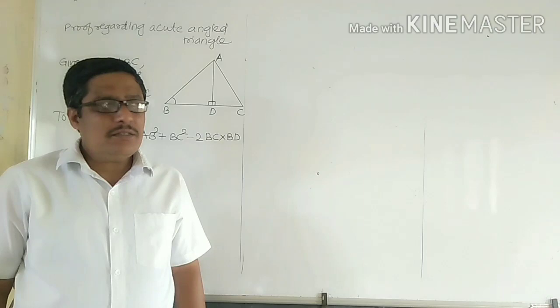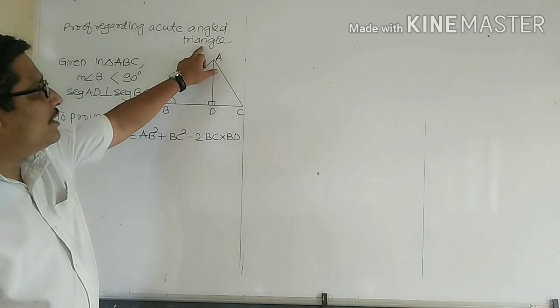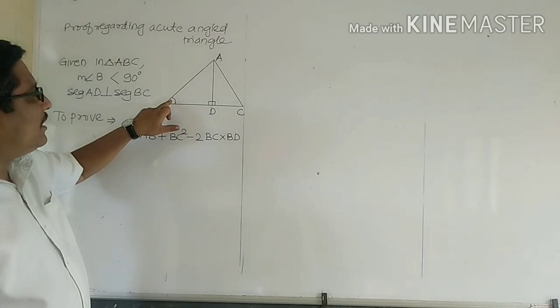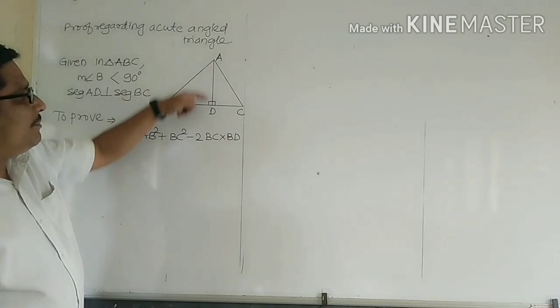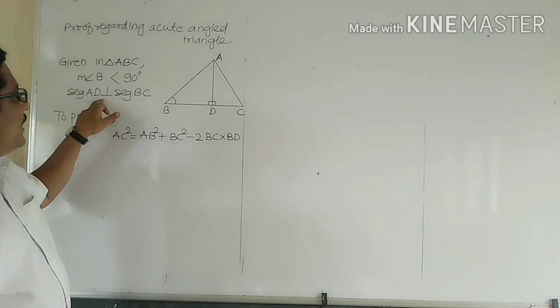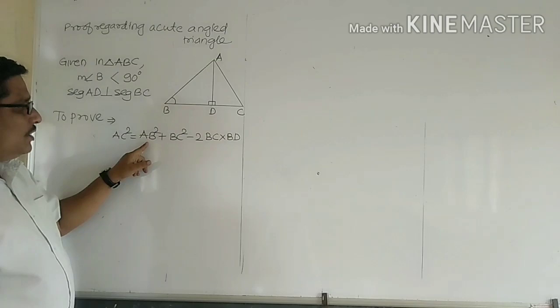We have learnt about the application of the Pythagoras theorem. In this, three different proofs are there. The first is regarding an acute angle triangle, where one angle is an acute angle. Here we have taken angle B as an acute angle, so the measure of angle B is less than 90 degrees, and segment AD is perpendicular to BC.